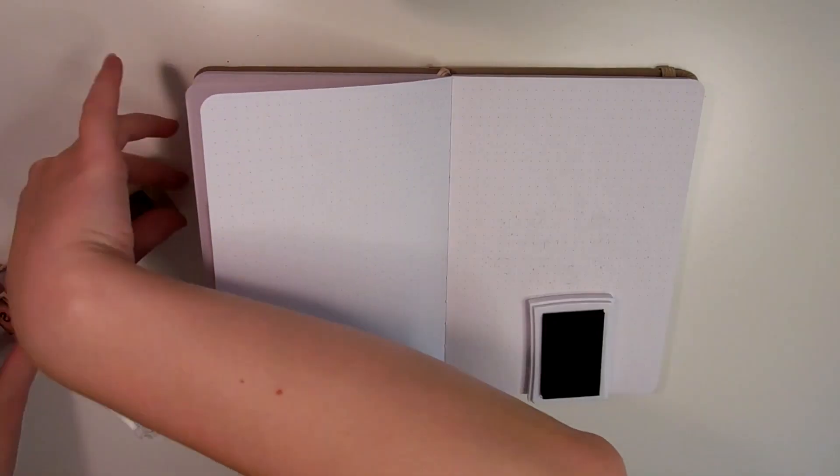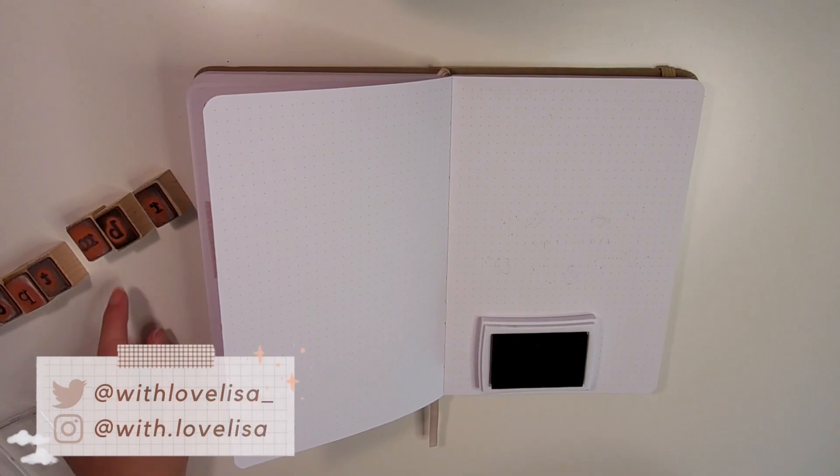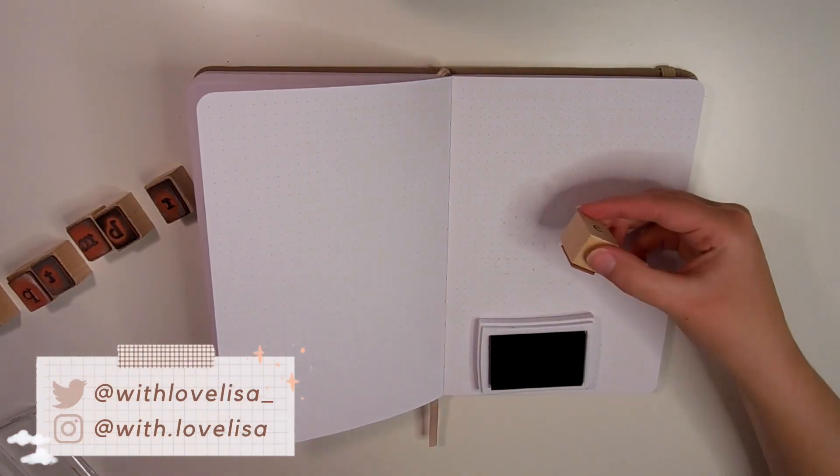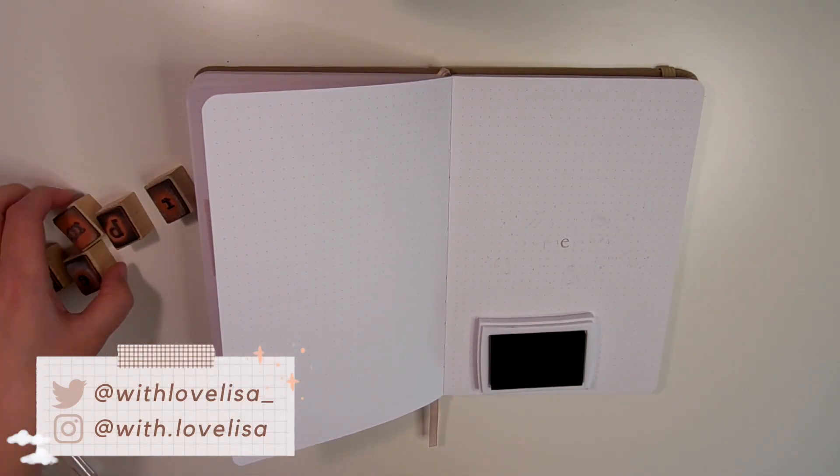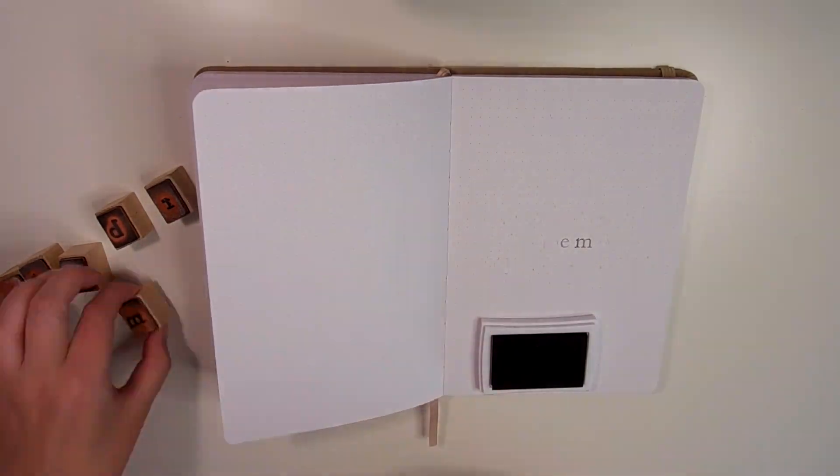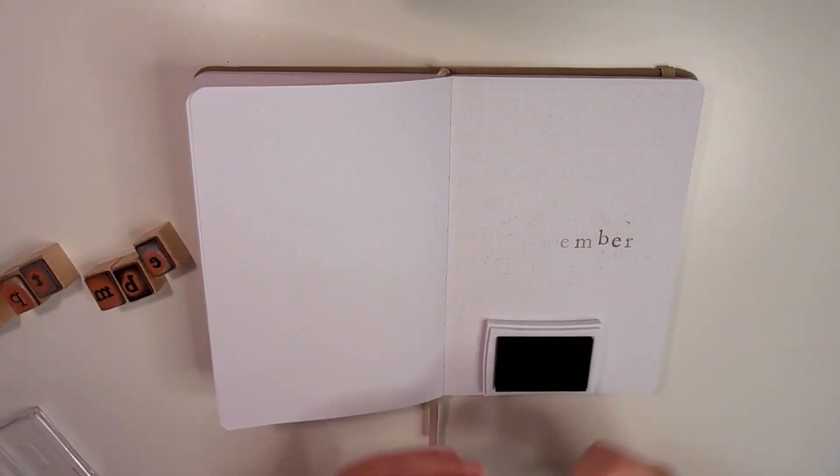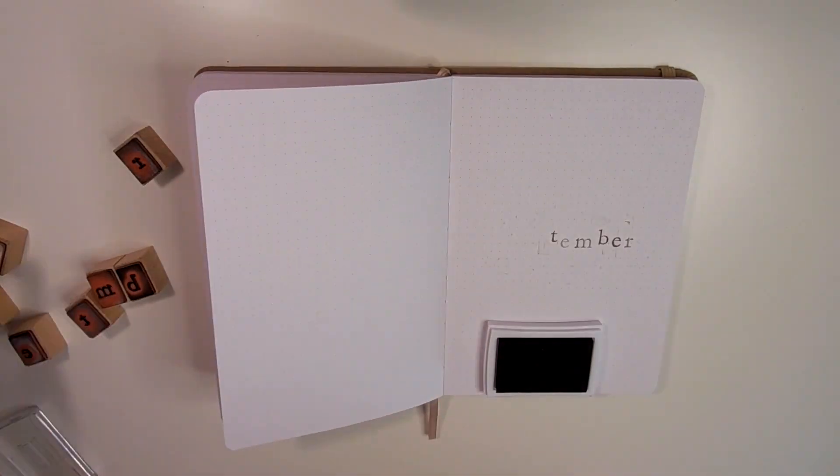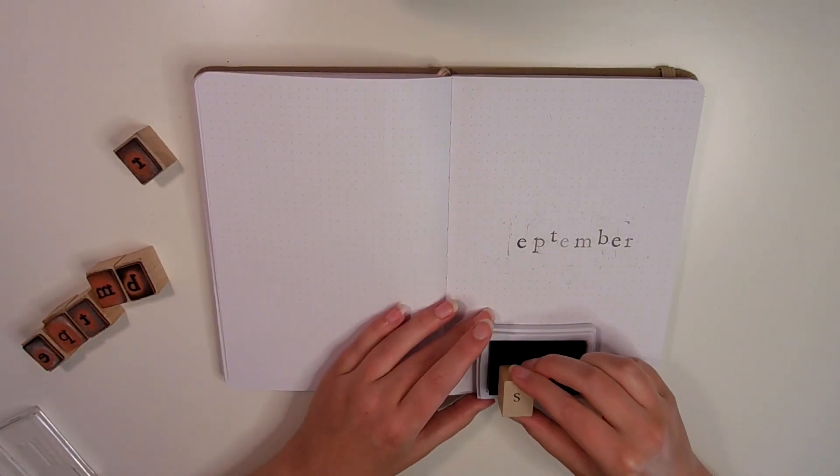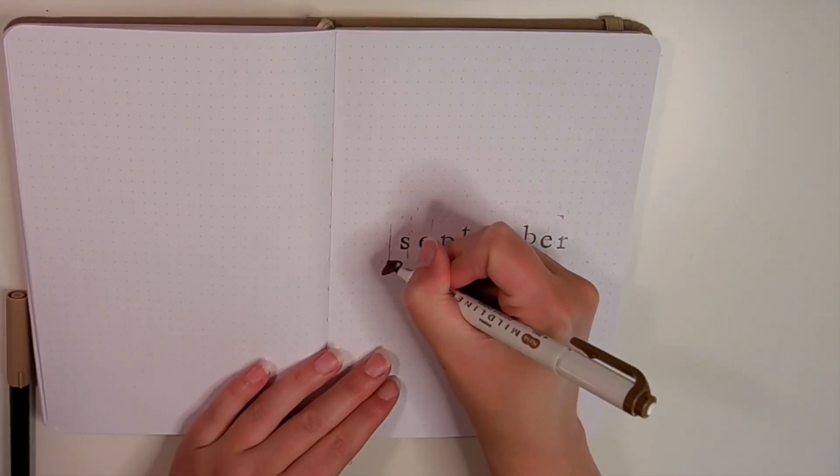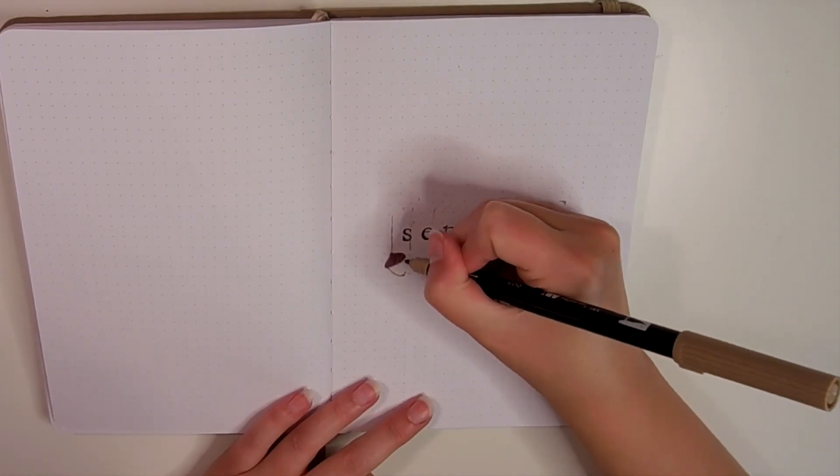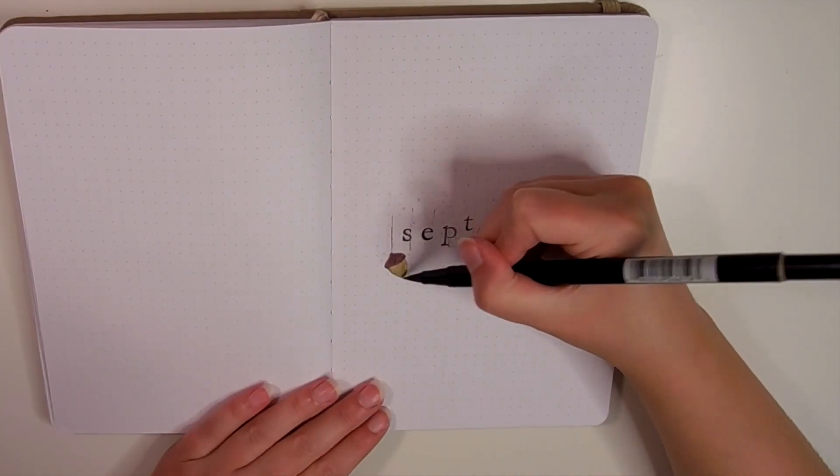Hello friends, it's Lisa and welcome to my bullet journal setup for the month of September. As we're entering the autumn season, which is my favorite season, I knew I really wanted to focus this month's theme around that. I feel like I always want to do a very fall cozy theme in September just because I love the season so much.